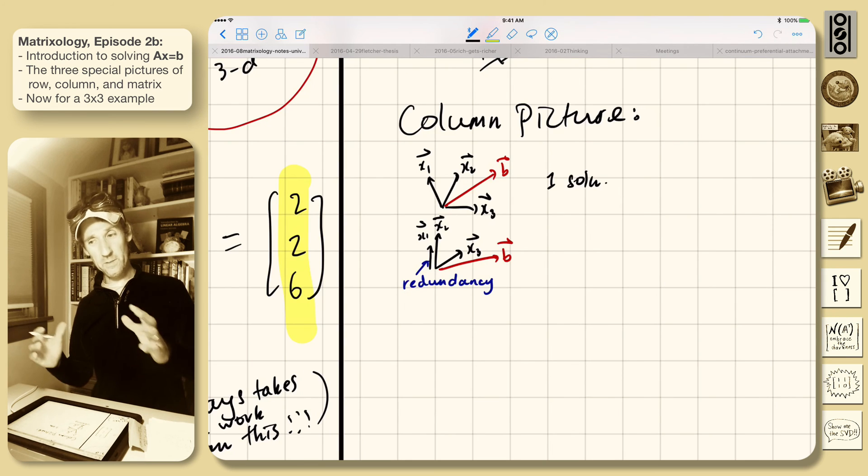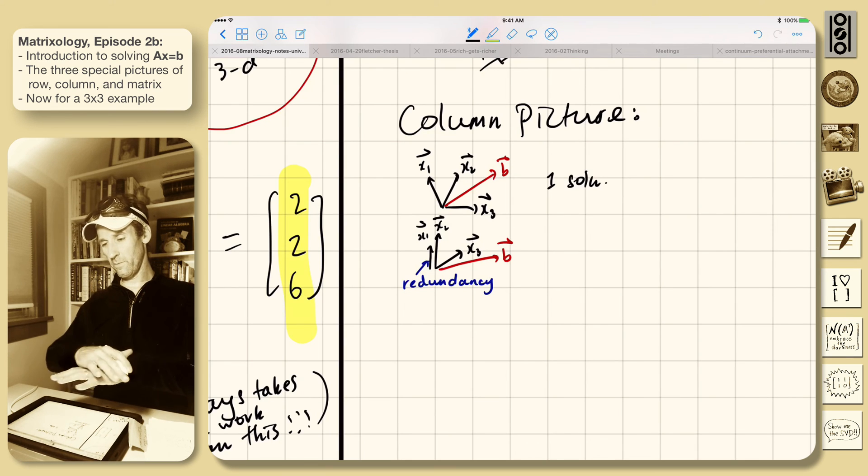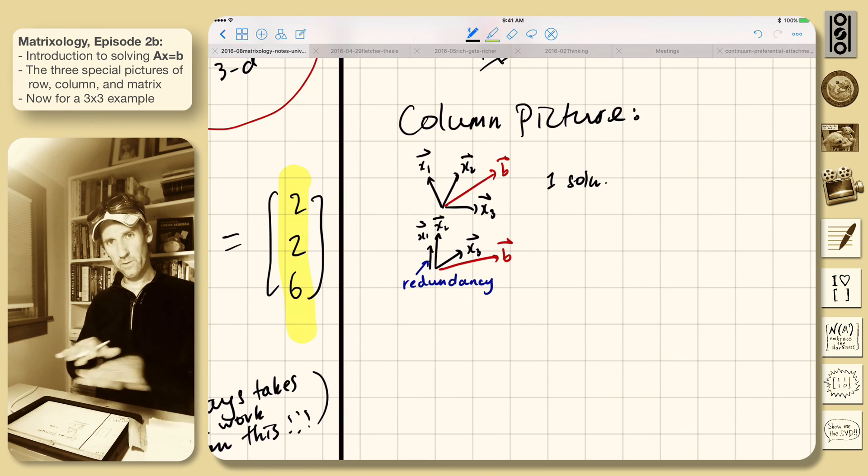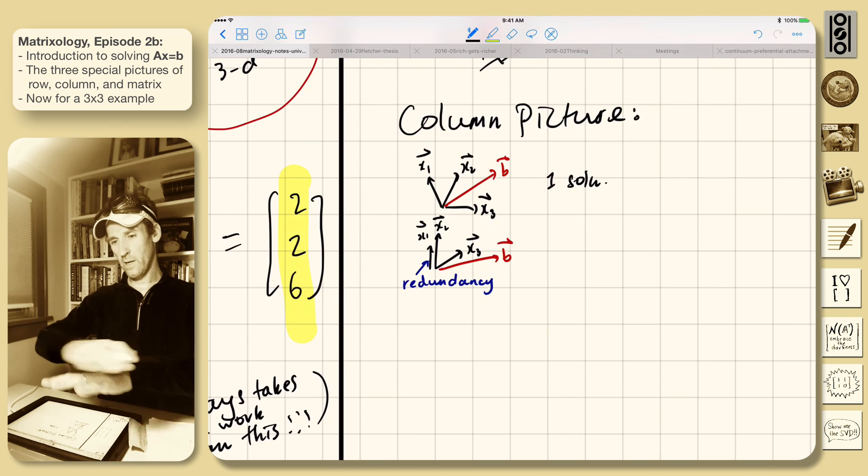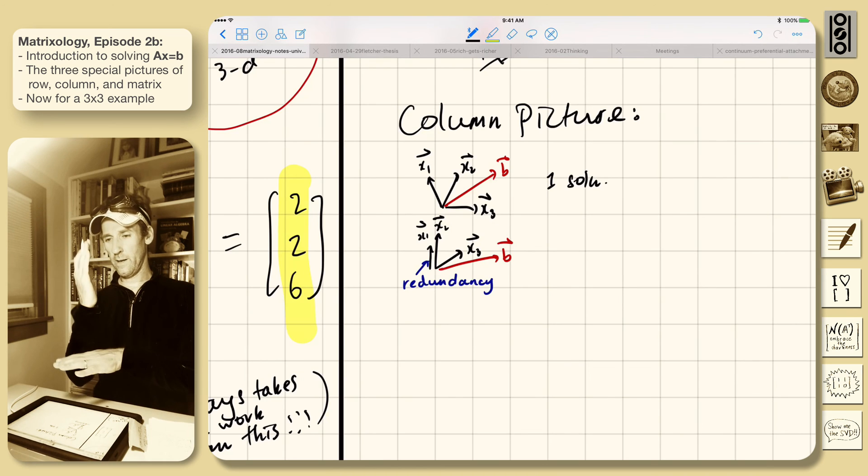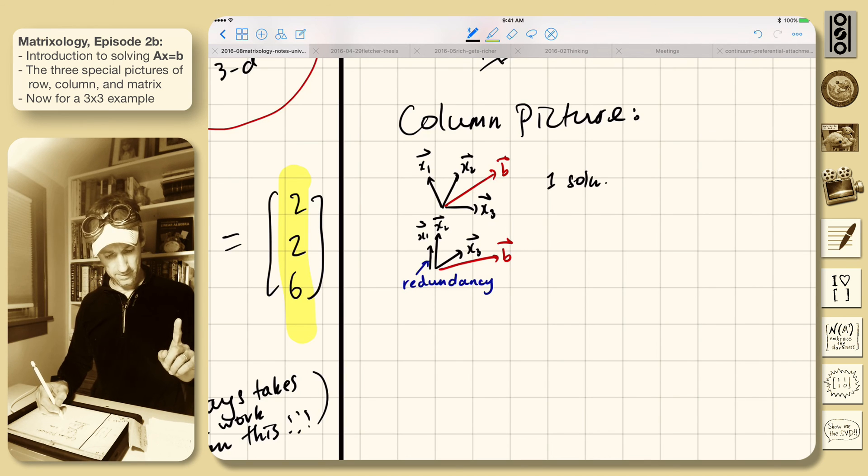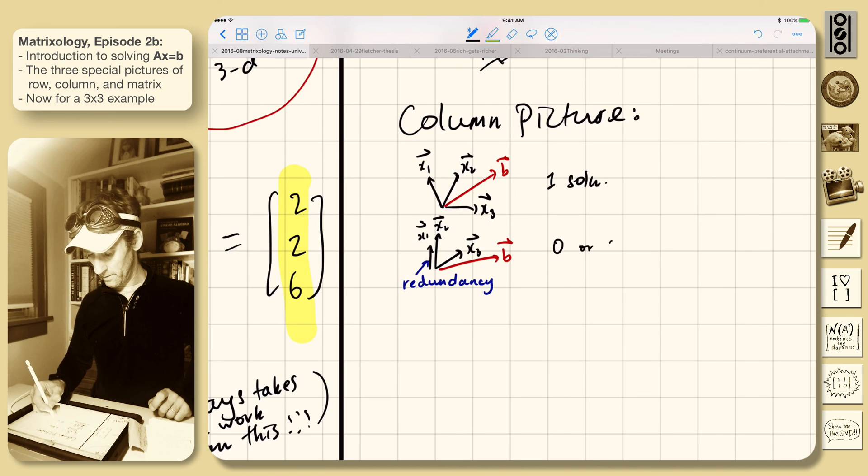But if there's redundancy, then it's possible, so say that you can only reach a plane, right? You can only, you have a vector here, x1, x2, and x3. And if you add lots of combinations of linear combinations, you only just map out a plane. And b is pointing out, you can't make it. So from an orchestra point of view, you can't make that sound. You're missing the instrument. So this is potentially, right? So zero or infinitely many solutions.